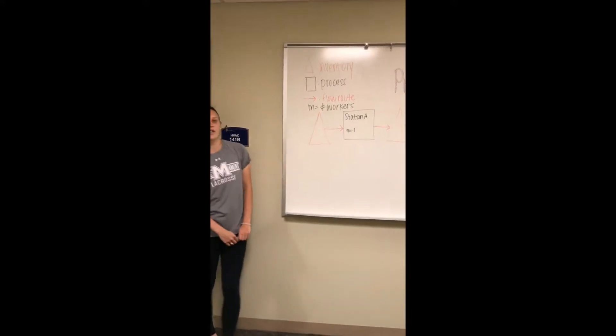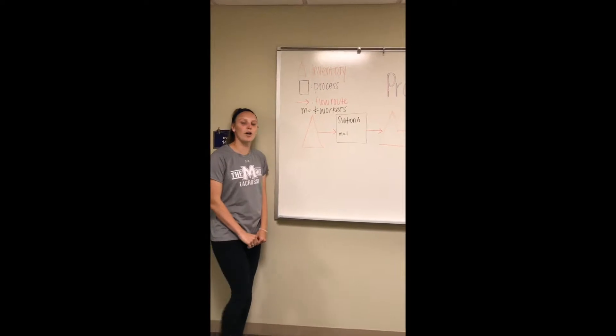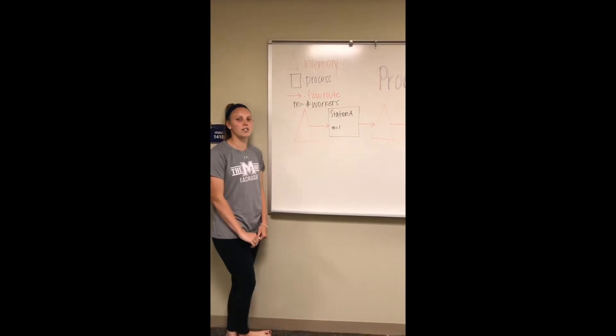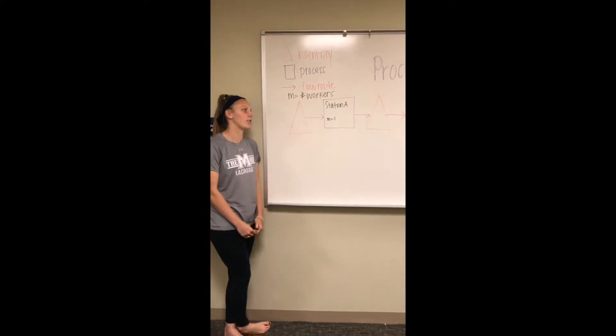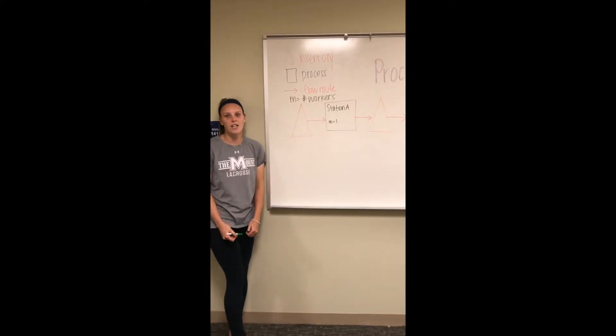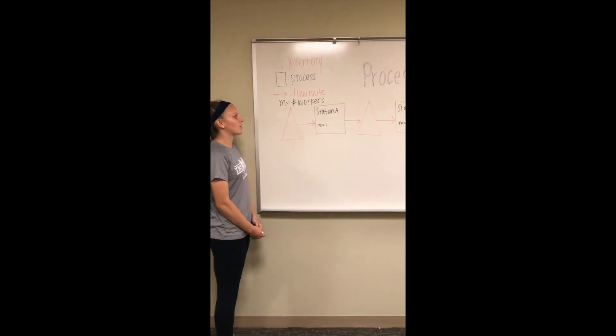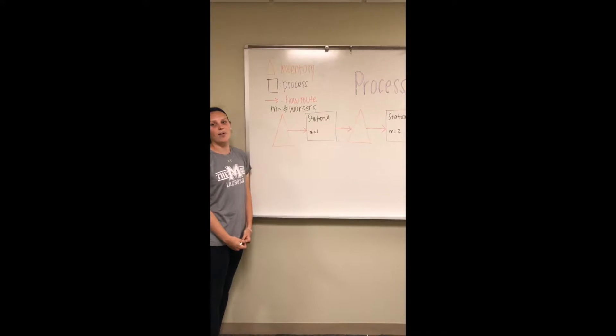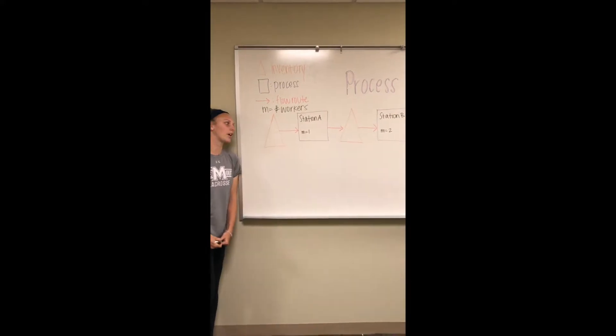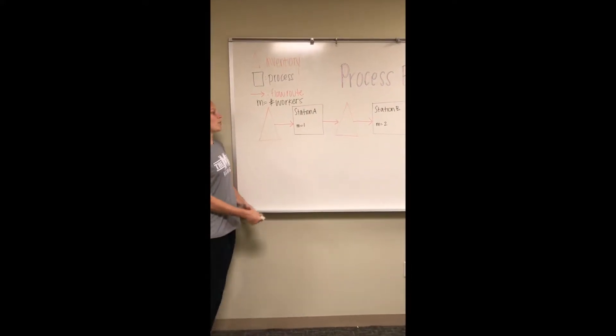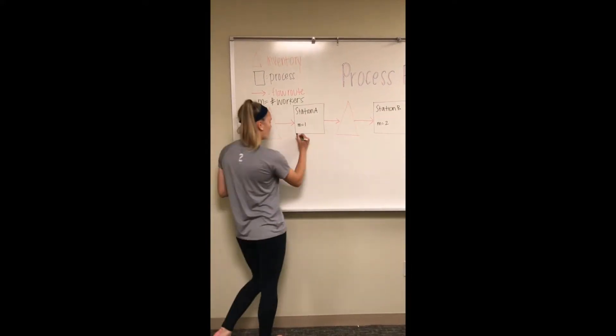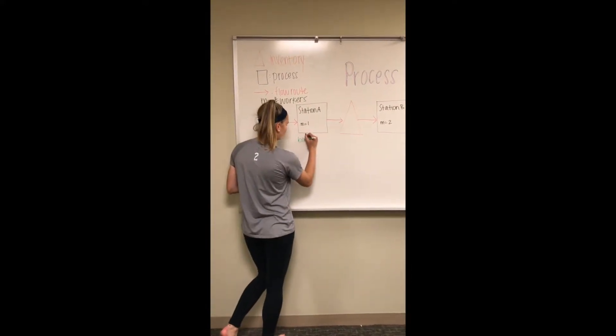We will use the example of getting a Chipotle burrito to show what a process flow diagram is. First, you start at station A, which has one worker. First, you pick if you want a bowl or a burrito.